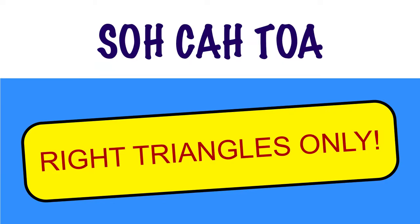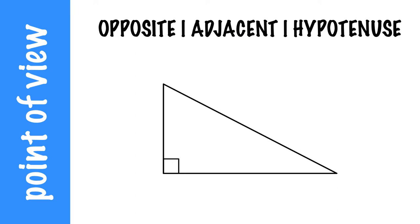SOHCAHTOA is for right triangles only. Now let's talk about perspective. I have my right triangle. I'm going to label it up: A, B, and C.